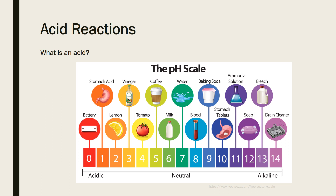Now we're going to talk about some reactions that involve acids, but in order to do so we need to know what an acid actually is. To explain that we have to talk about a measurement tool called the pH scale, which goes from 0 all the way to 14, with 7 being in the middle. Chemicals or liquids at the high end with a pH of 12, 13, or 14 we say are alkaline or basic.